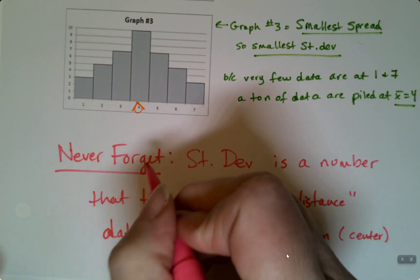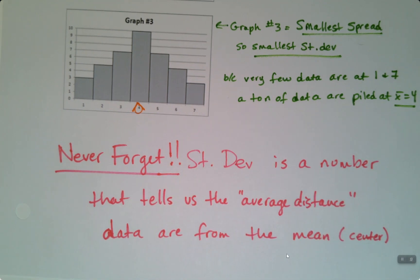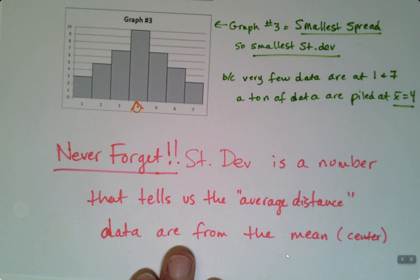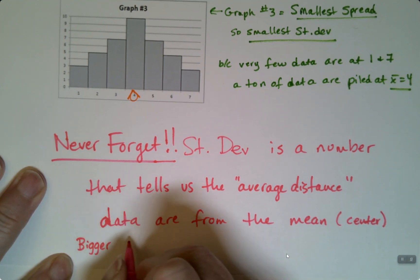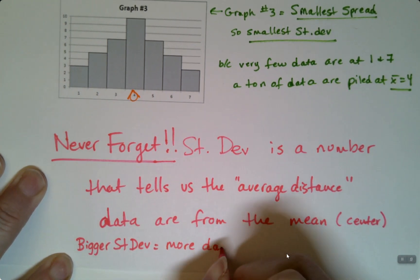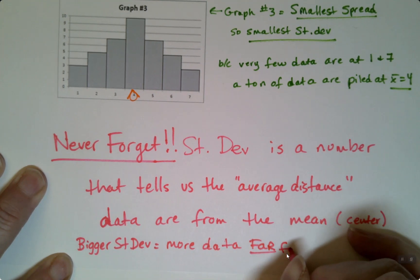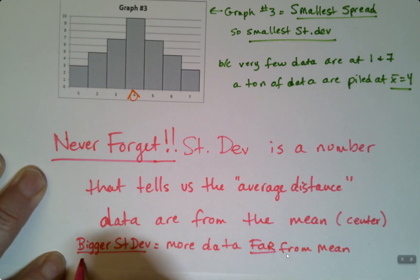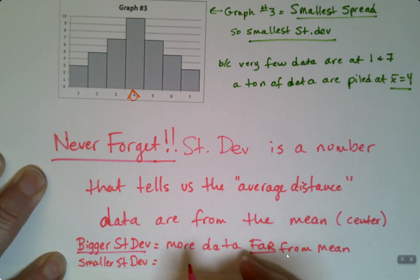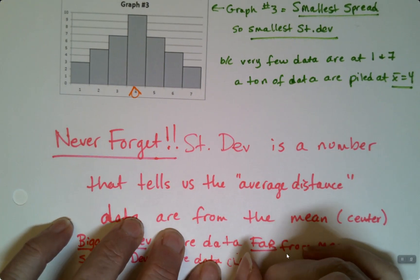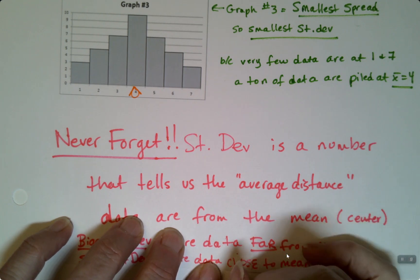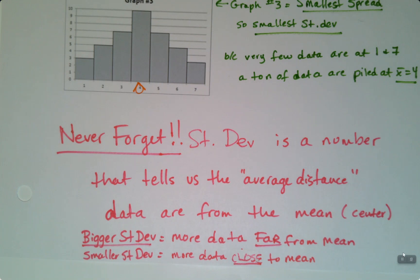Never forget, star it, the standard deviation is a number that tells us the average distance, I'm fudging it a little bit, but basically the average distance the data are from the mean. That is what it measures. The bigger the standard deviation, the more things are far away from the mean. The smaller the standard deviation, the more things are close to the mean. More data far from the mean. Smaller standard deviation, more data are close to the mean.